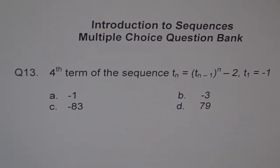Here is question 13. Fourth term of the sequence t_n = (t_{n-1})^n - 2, where t_1 = -1.